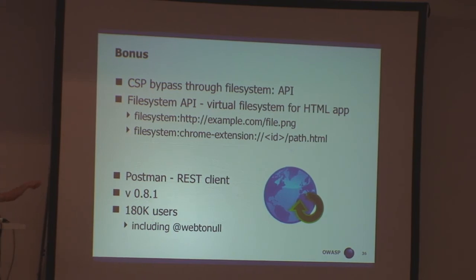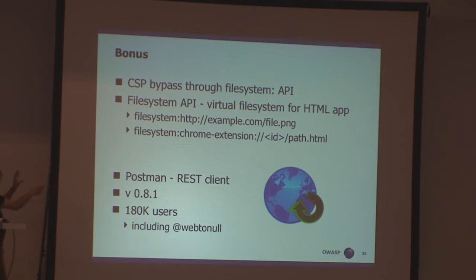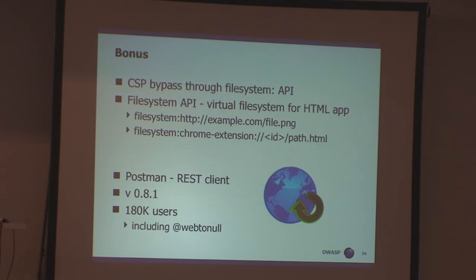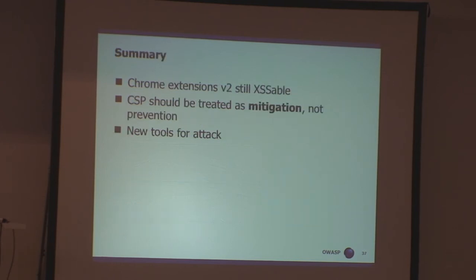The URL for a file stored within the file system container typically looks like: if an HTTP website uses the file system, this is the full URL of a document. If a Chrome extension does it, it's kind of like a hosting equivalent. I found an extension which, by total coincidence, was also presented today — it's an extension for testing REST APIs called Postman, with around 180,000 users, including the other presenter. Let's see what happens with this.